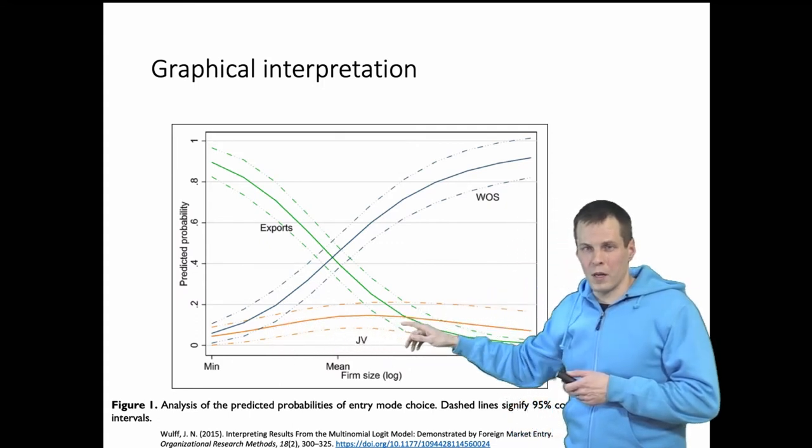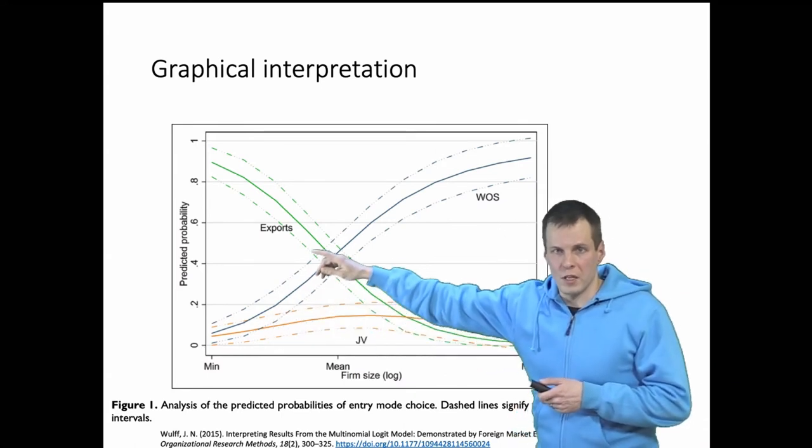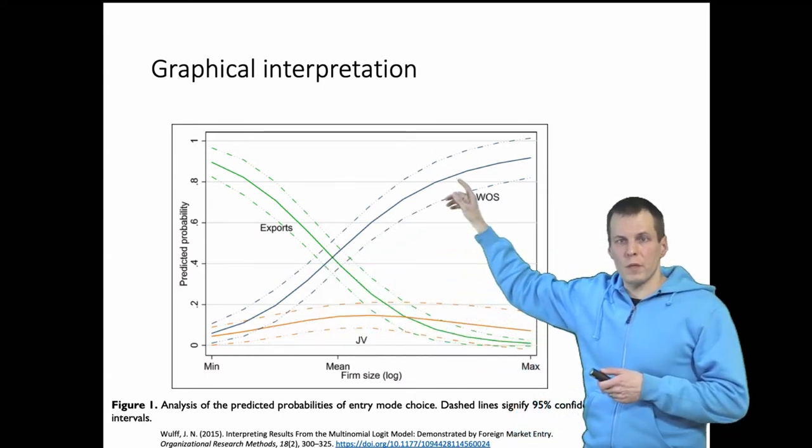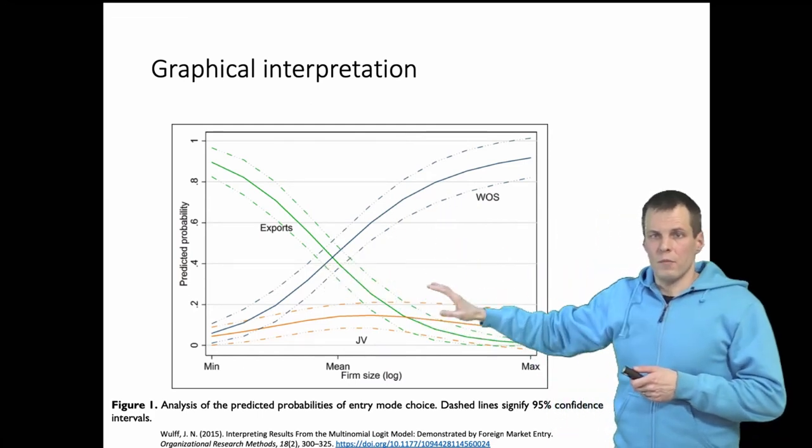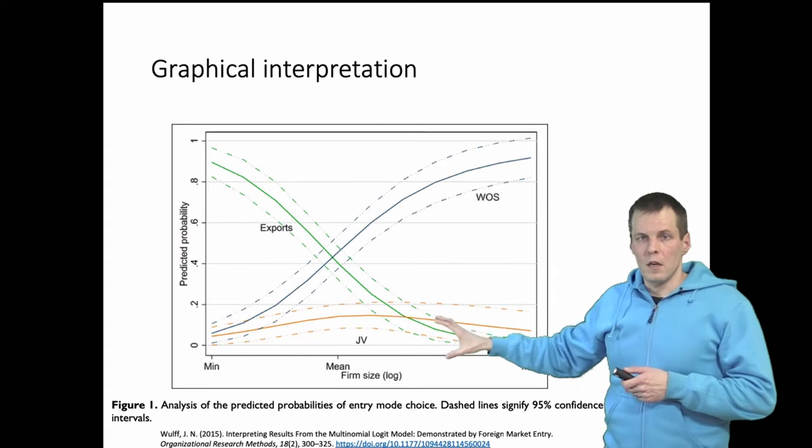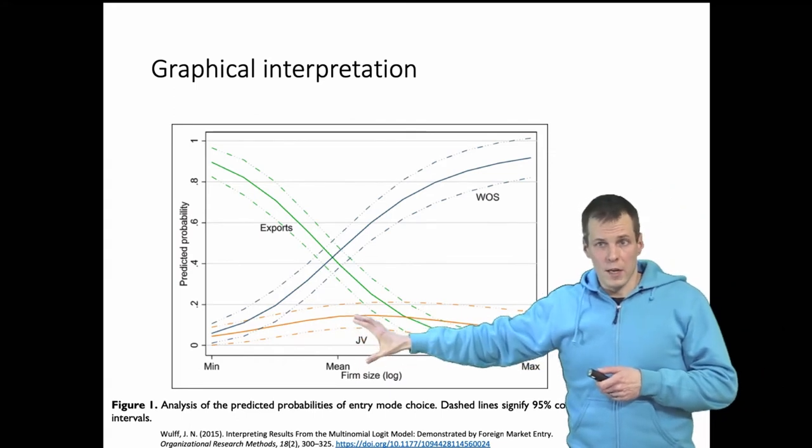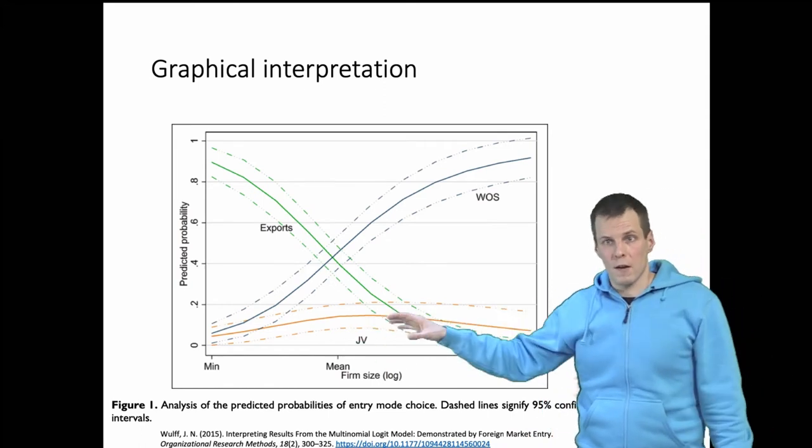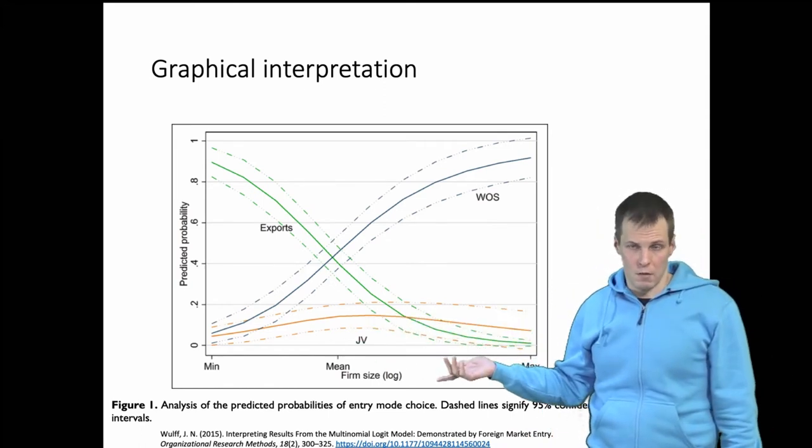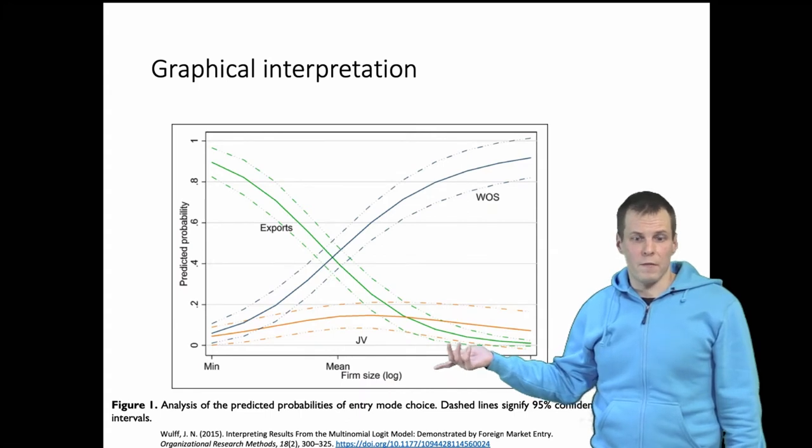The interpretation of these plots would be that smaller companies tend to go for exports. As the company size increases, the joint venture odds increase as well, but not by much. It's much more common that you go for a subsidiary. So it's basically a choice between exports and subsidiary, but a small fraction of companies, mostly in the medium size, go for a joint venture as well. That's how you interpret - what do these graphics mean? You don't interpret the actual numbers because that's very difficult to do.